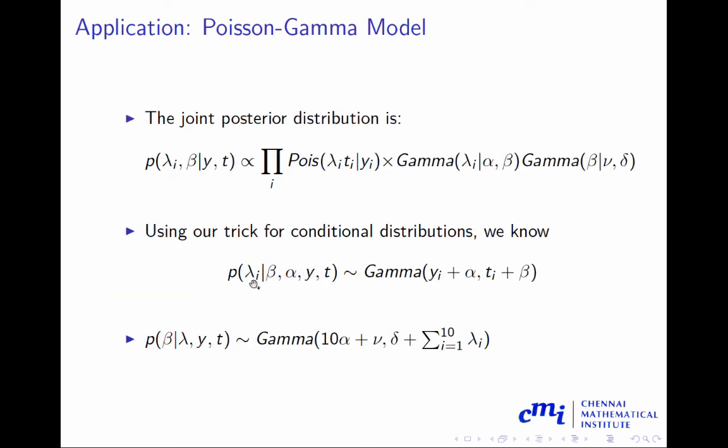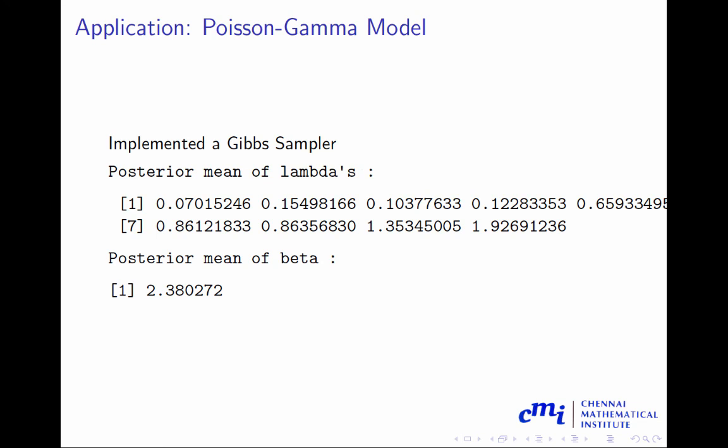So effectively, there are i equals 1 to 10, so basically 10 posterior gammas plus one for beta. So there will be 11 conditional chains I can create, and then we can create a full Gibbs sampler here in this case. We can simulate for each lambda the posterior, and we can draw the samples. This is the posterior mean of lambdas, and it is sorted from lowest to highest. You can see that this one is really large—we don't know how big this is—but this one is very large. And this is the posterior mean of beta.